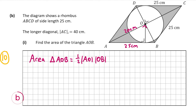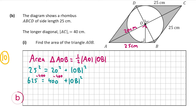Pythagoras's theorem says the hypotenuse squared equals the other two sides squared added together. So: 25 squared equals 20 squared plus OB squared, which gives 625 equals 400 plus OB squared. Subtracting 400 from both sides gives 225 equals OB squared, so OB equals the square root of 225, which is 15 centimeters.